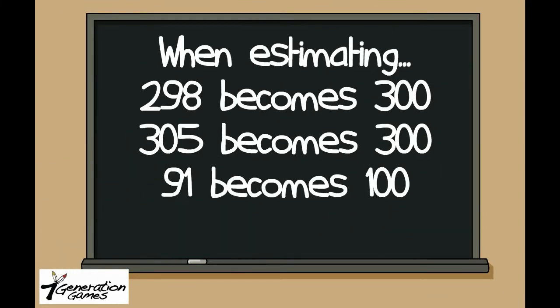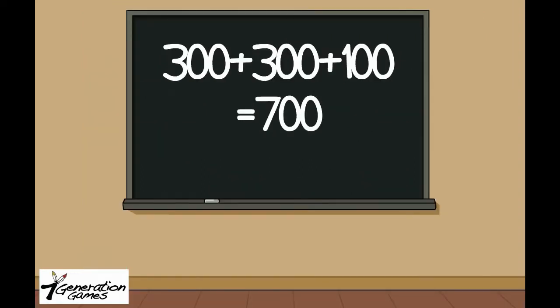Let's try it with our road trip problem. 298 is close to 300. So is 305. 91 is about 100. Adding 300 plus 300 plus 100 is something you can probably do in your head, and it's definitely easier than adding 298 plus 305 plus 91 in your head.